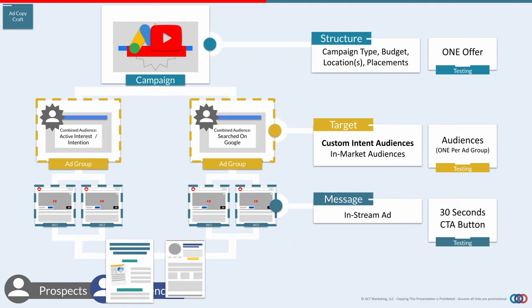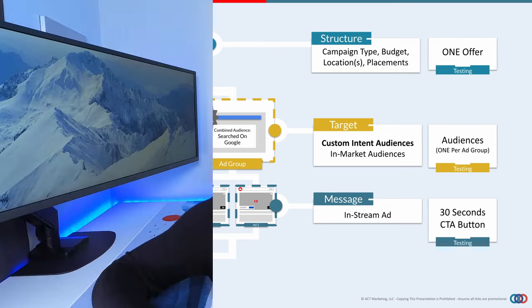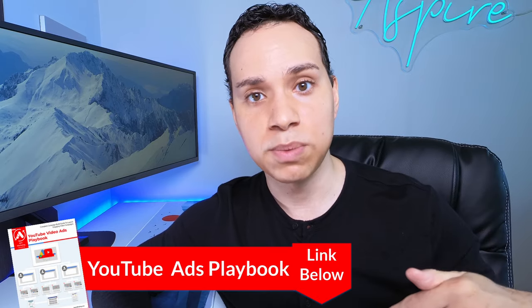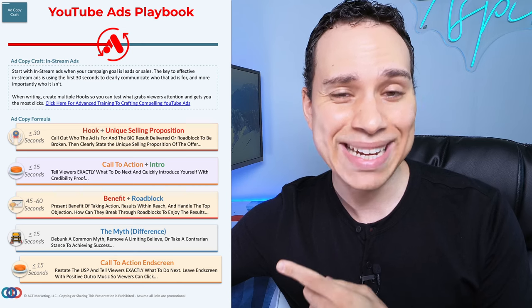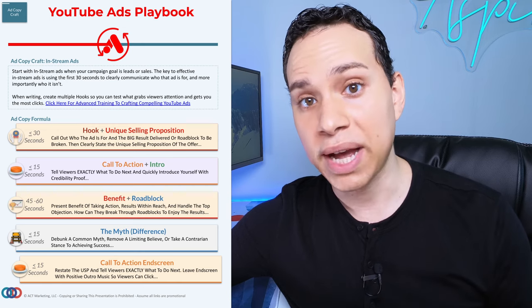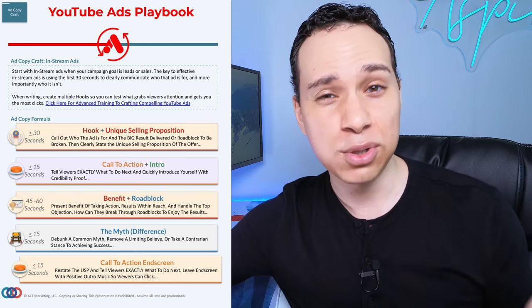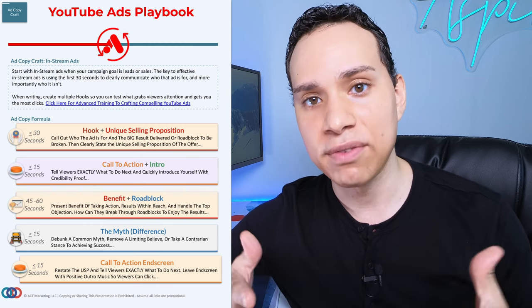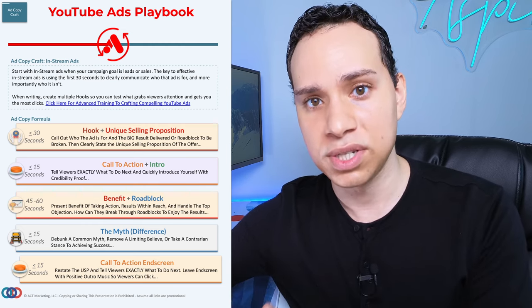Jumping back into our diagram — we've created our campaign, we've set up our ad groups telling Google who we want our ads to show to, and now it's time to create our actual ads. When it comes to ad creation, check out the link in the description to our YouTube ads playbook, which goes through a simple 90-second script to hook your ideal viewers, repel those who aren't a good fit, and drive viewers who are a good fit over to your site. We're going to be using skippable in-stream ads.